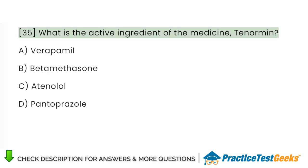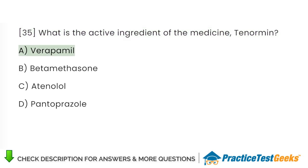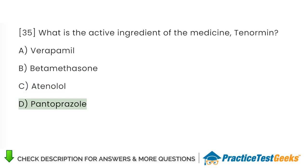What is the active ingredient of the medicine Tenormin? A. Verapamil. B. Betamethasone. C. Atenolol. D. Pantoprazole.